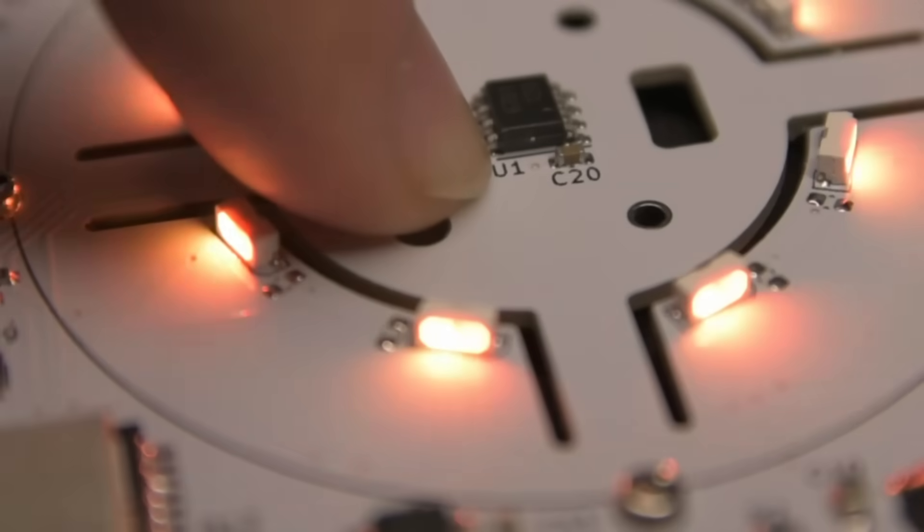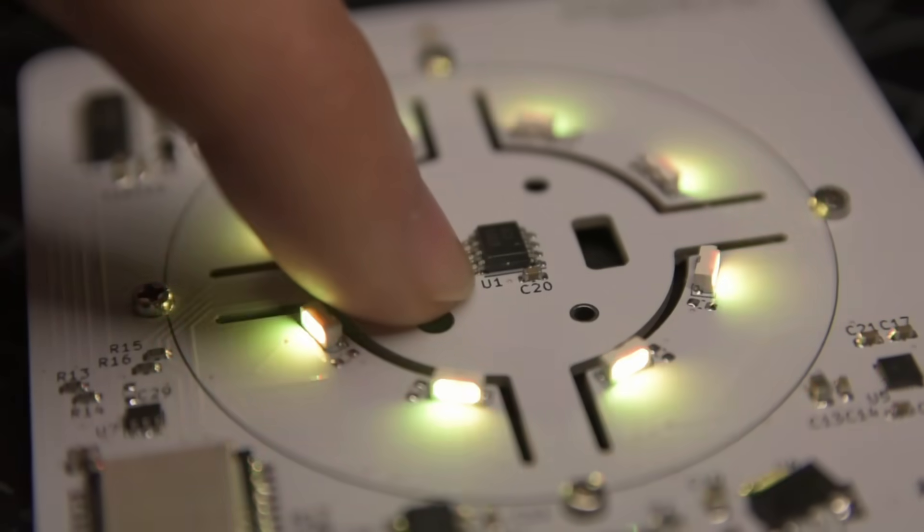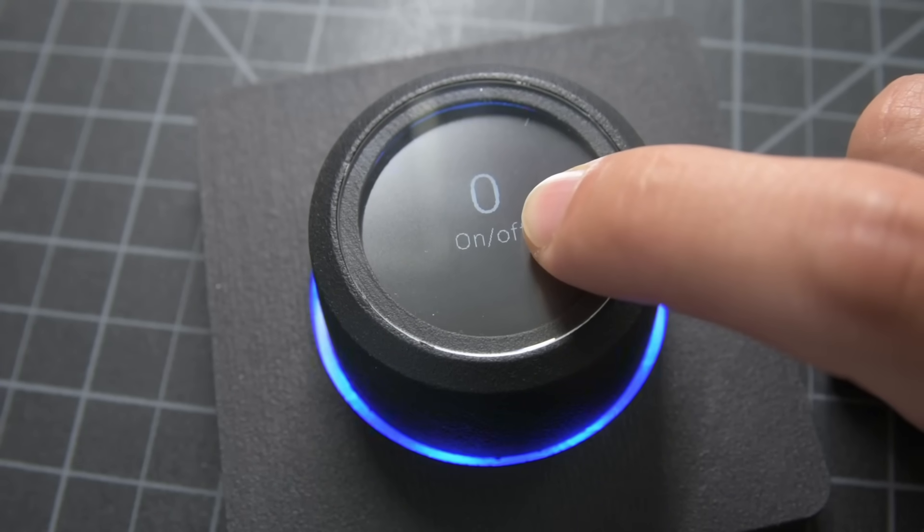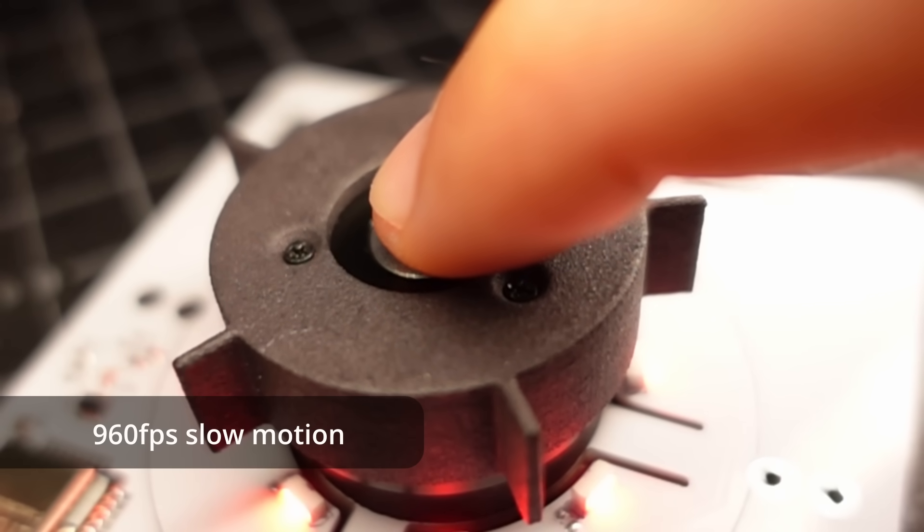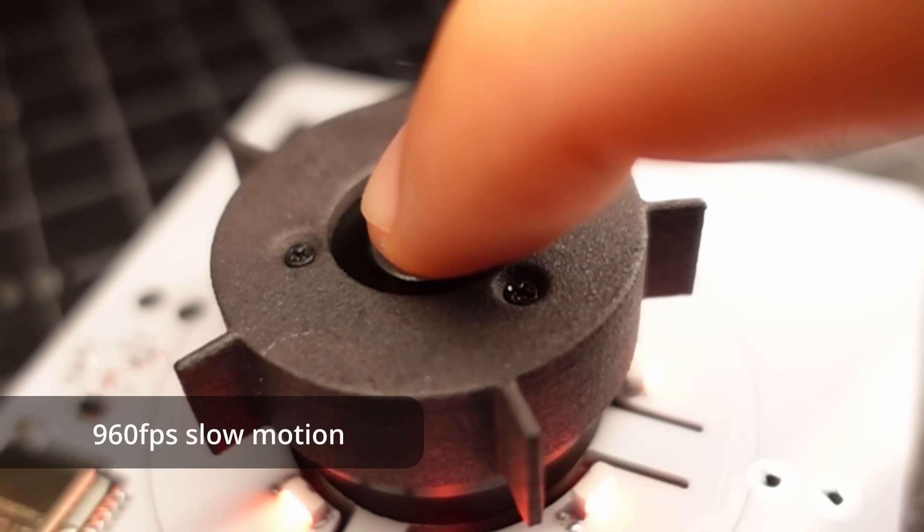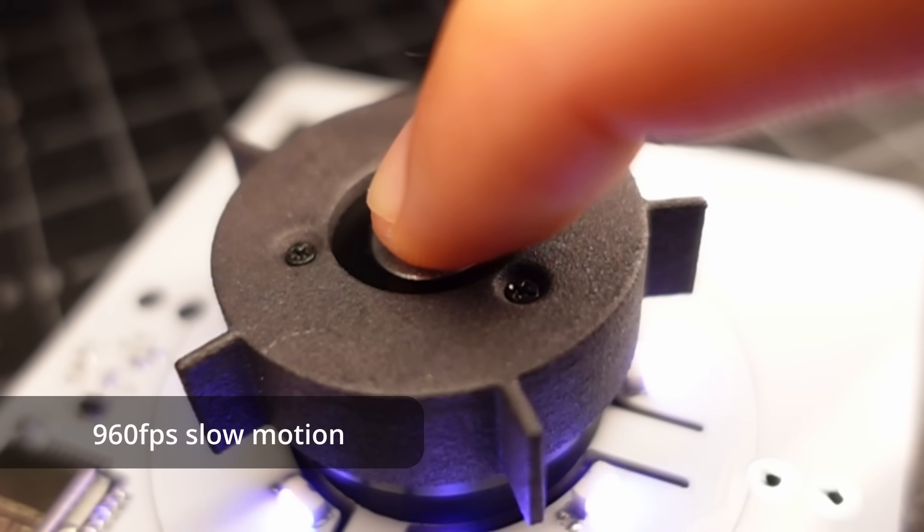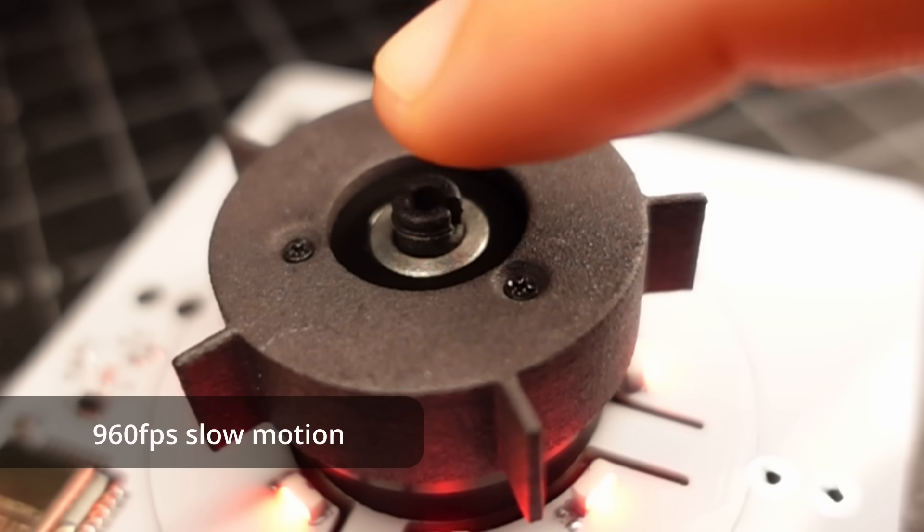However, because the PCB and knob barely even move when you do this, it would be hard for you to know whether you've pressed hard enough for the click to register. There's a pretty easy solution to that. We can trick your brain with a bit of haptic feedback using the knob's motor. As soon as you've pressed hard enough, the motor gives a super short kick to simulate the tactile click feeling of a button. And then as you let up, the motor gives another weaker kick, simulating a button snapping back when released.